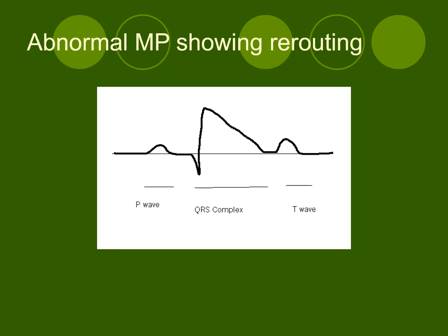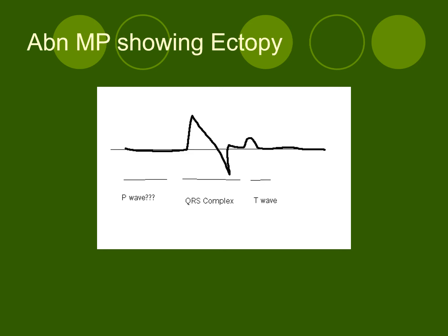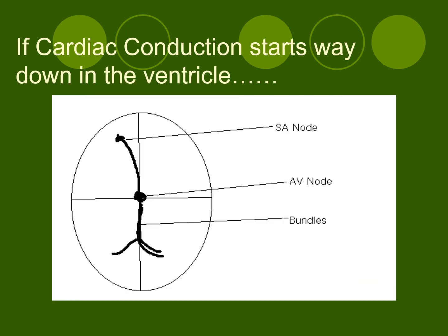Looking at the basic monitor pattern, you can see ST segment elevation and widening of the QRS complex. If a cardiac impulse starts from a different location, the appearance of the cardiac wave will differ. That summarizes the essentials — we'll work through cases and there should be some additional YouTube talks posted.